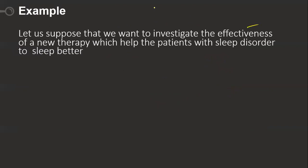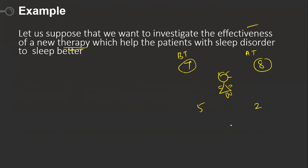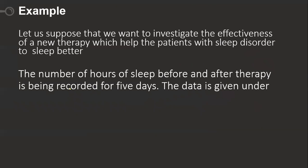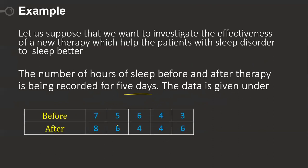Let's take an example: we want to investigate the effectiveness of a therapy for a sleep disorder. Participants are given a therapy — in the form of a tablet or exercise — and we measure hours of sleep before and after. For example, one person sleeps seven hours before and eight hours after; another sleeps five hours before and six hours after. This is paired data because both measurements come from the same person. The number of hours of sleep before and after therapy is recorded for five subjects.